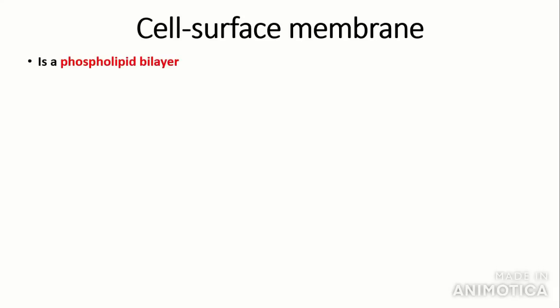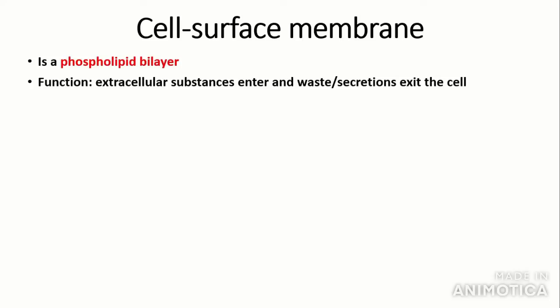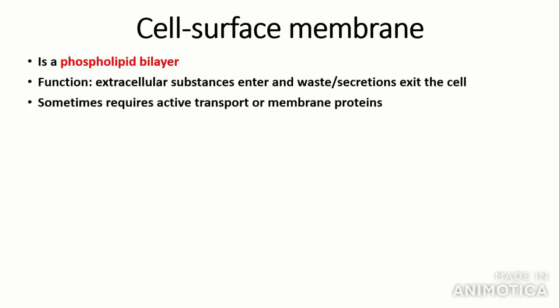The first organelle we're going to talk about is the cell surface membrane. The cell surface membrane is made up of a phospholipid bilayer, which means that there are two layers of phospholipids with the phosphate group head facing outwards and the hydrophobic fatty acid tails facing inwards. Their main function is to control the entry and exit of extracellular substances in the cell. This sometimes requires active transport or membrane proteins depending on the charge and size of the substance.